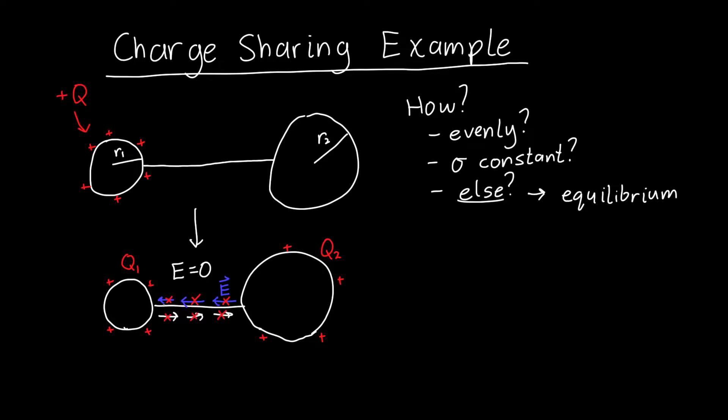If there's no electric field along the wire, then the integral of the electric field along the wire from point A to point B is equal to zero, which means the difference in voltages between the two surfaces has to be equal to zero. The potential on the surface of sphere one is equal to the potential on the surface of sphere two. We can use this to figure out what the charge is.